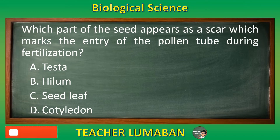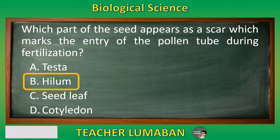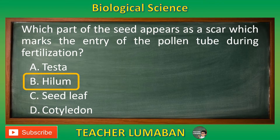The correct answer is Letter B: Hylum. The Hylum is the part of the seed that appears as a scar that marks the entry of the pollen tube during fertilization.